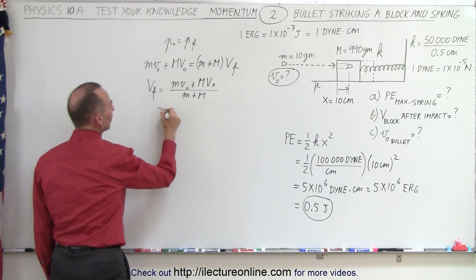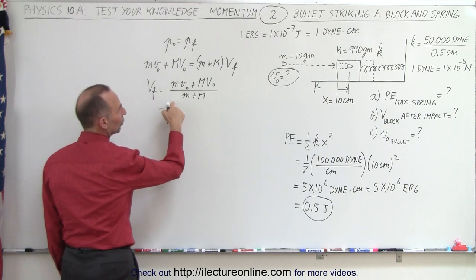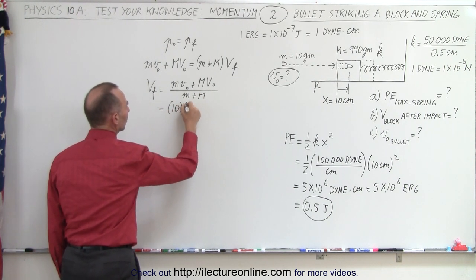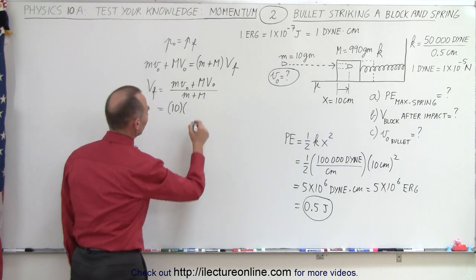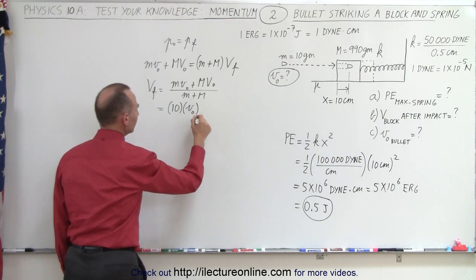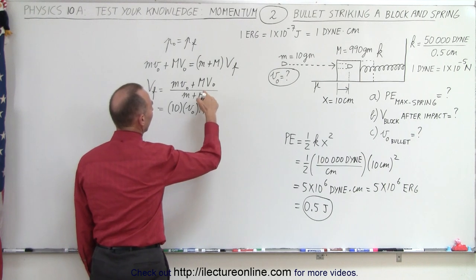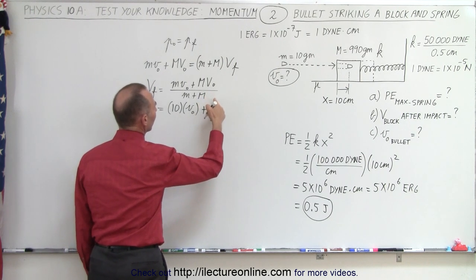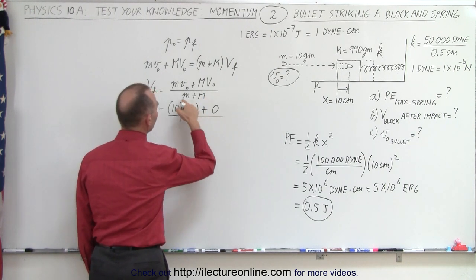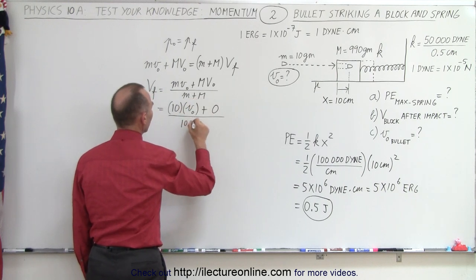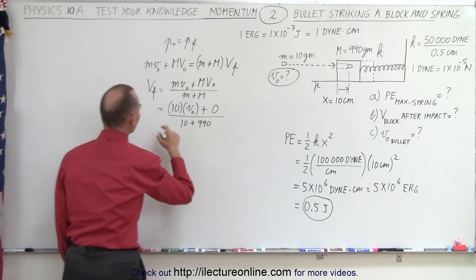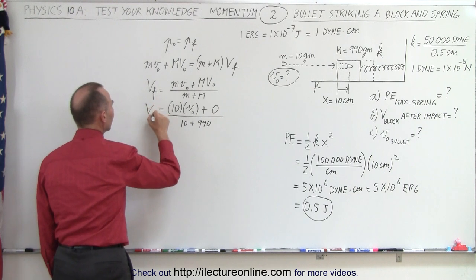Using conservation of momentum, p_initial equals p_final. Initially the bullet is moving, so we have the mass of the bullet times its initial velocity, plus the mass of the block times its initial velocity (which is zero, since the block was sitting still). That equals (m + M) times v_final. Plugging in numbers: the bullet mass is 10 grams, the block mass is 990 grams, and the total mass is 1000 grams.